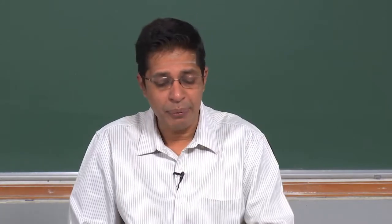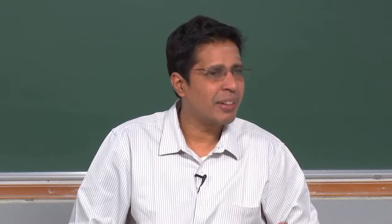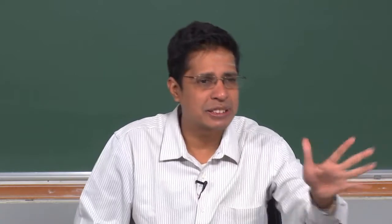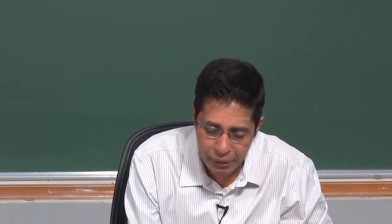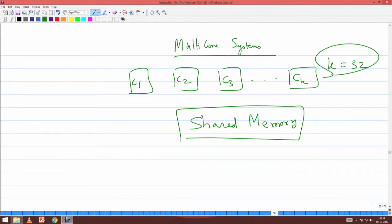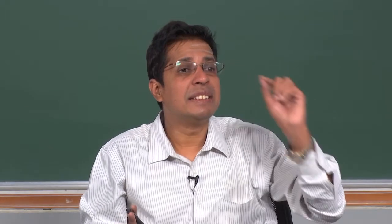When I write parallel programs, the way one program will talk to another is through passing messages. There are many ways of passing messages. But the way current ARM processors pass messages between cores is by using memory — that is why we call it a shared memory architecture. Across cores C1 to CK, I share memory. If C1 wants to send something to C2, it writes it into the memory; the other core reads from it. Everything centers around memory.